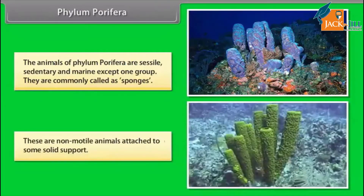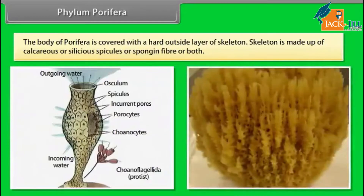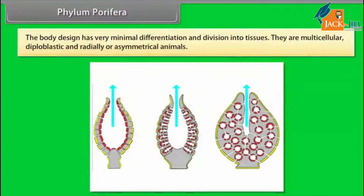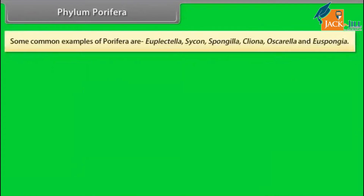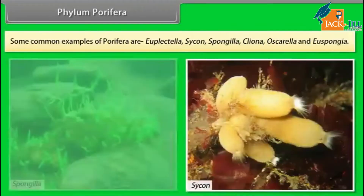These are non-motile animals attached to some solid support. The body of Porifera is covered with a hard outside layer of skeleton. Skeleton is made up of calcareous or siliceous spicules or spongin fibre or both. The body design has very minimal differentiation and division into tissues. They are multicellular, diploblastic, and radially or asymmetrical animals. Some common examples of Porifera are Euplectella, Sycon, Spongilla, Cliona, Oscarella, and Euspongia.